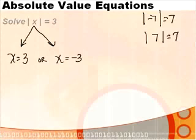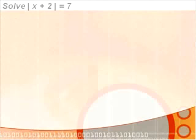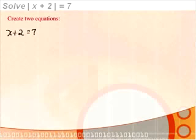Let's look at equations that have more than one step. Solve the absolute value of x plus 2 equal to 7. There could be two possible values for x that give us an absolute value of positive 7. To solve this, we create two equations: x plus 2 equal to 7, and x plus 2 equal to negative 7, by removing the absolute value bars.